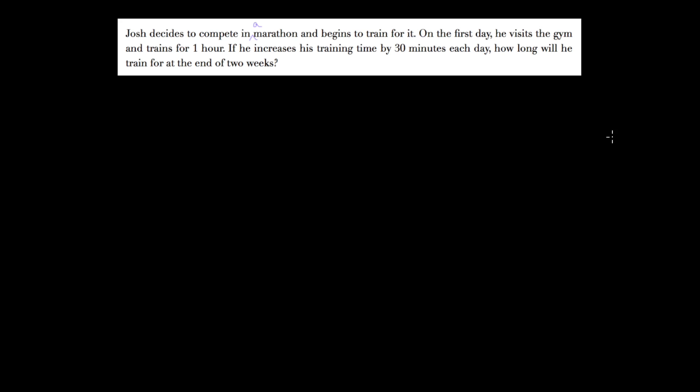So we have some important information here. It says on the first day, when we see that we automatically know that it's going to give us our u sub 1. So on the first day he visits the gym and trains for one hour. That immediately tells me my u sub 1 is 1 because it's one hour.